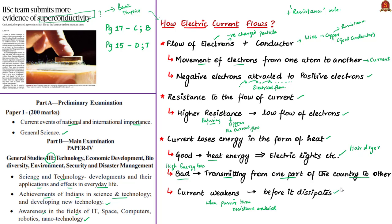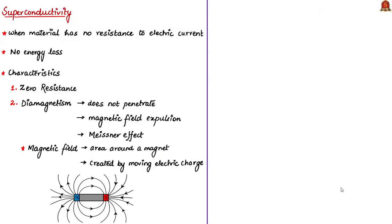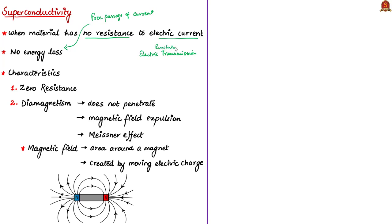This is why superconductivity is so special. Superconductivity is when a material stops resisting, meaning it has zero resistance to an electric current and allows the current to pass through freely with no energy loss. Superconductivity has the potential to revolutionize electrical transmission, transportation and physics. It has two main characteristics: first is zero resistance, and the second is diamagnetism. To understand diamagnetism, we first need to know what a magnetic field is. A magnetic field is the invisible area around a magnetic object that can pull or push another magnetic object, created by moving electric charge.